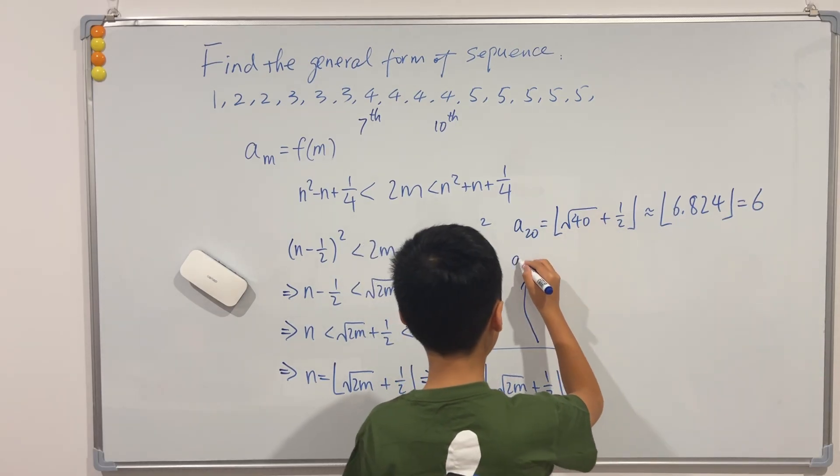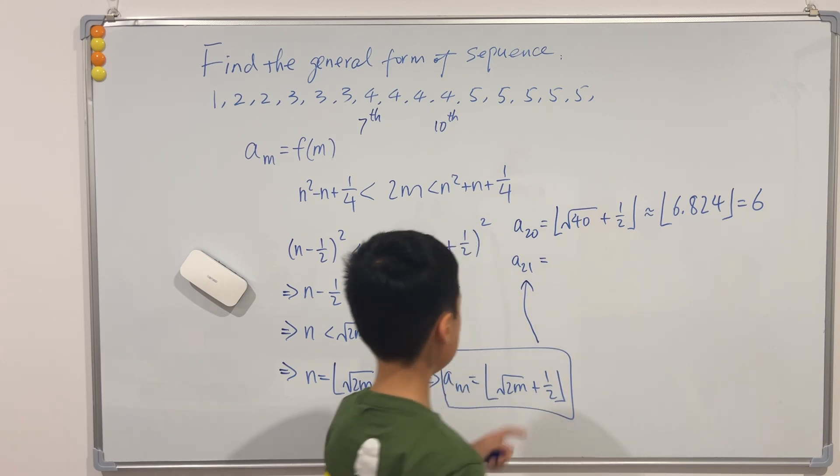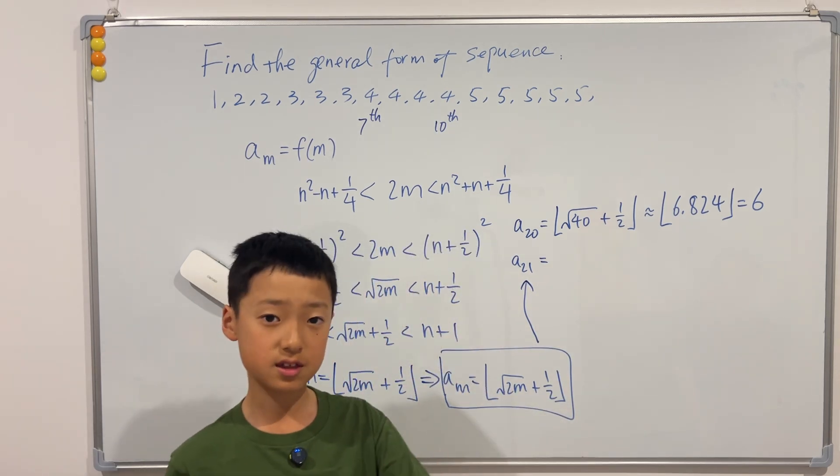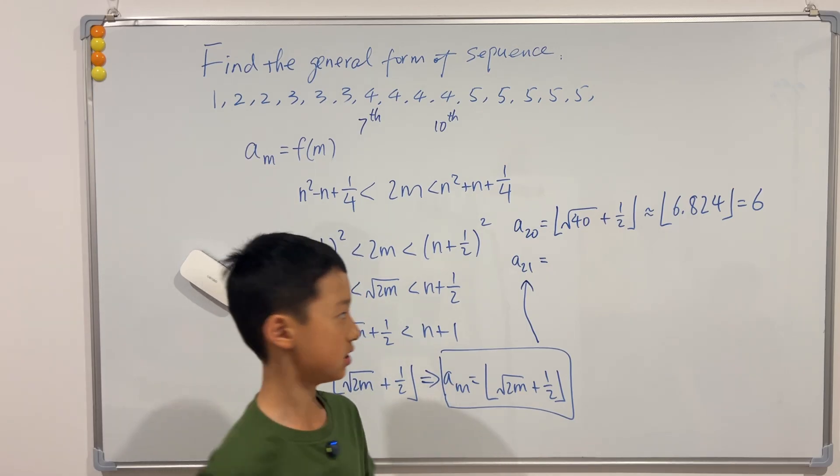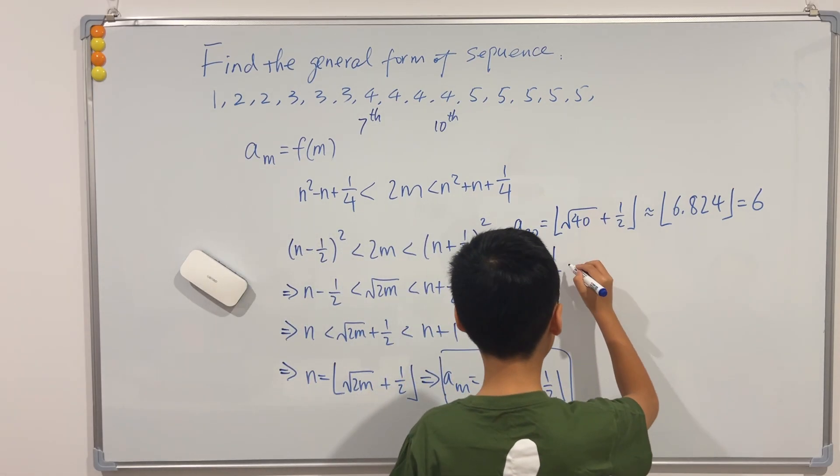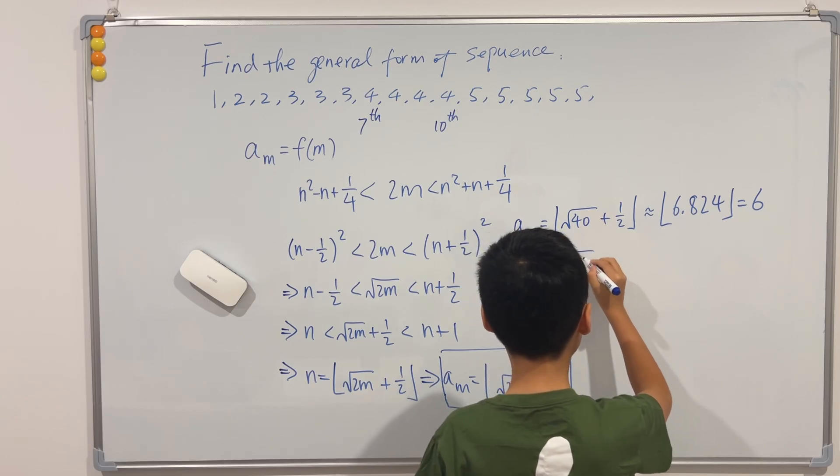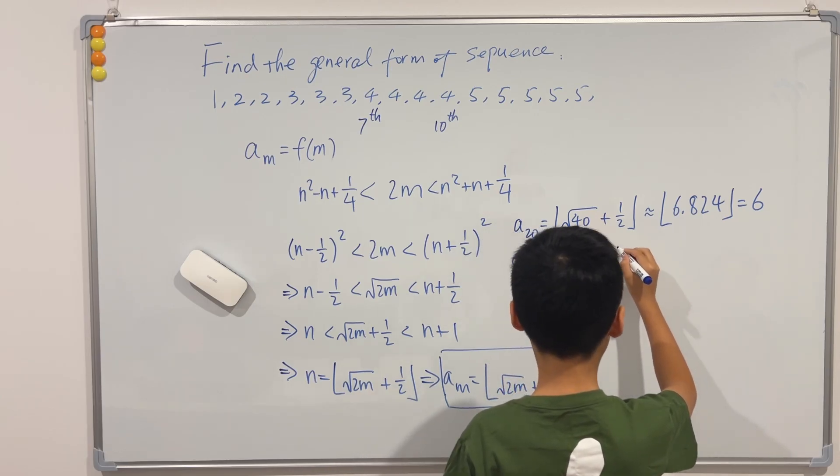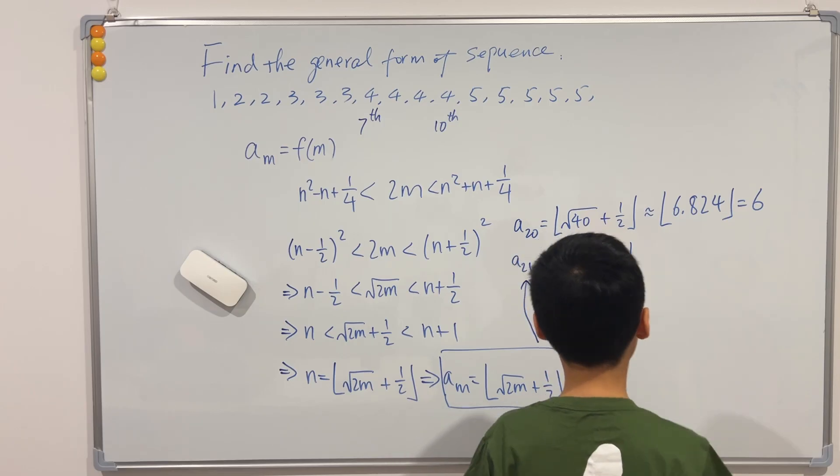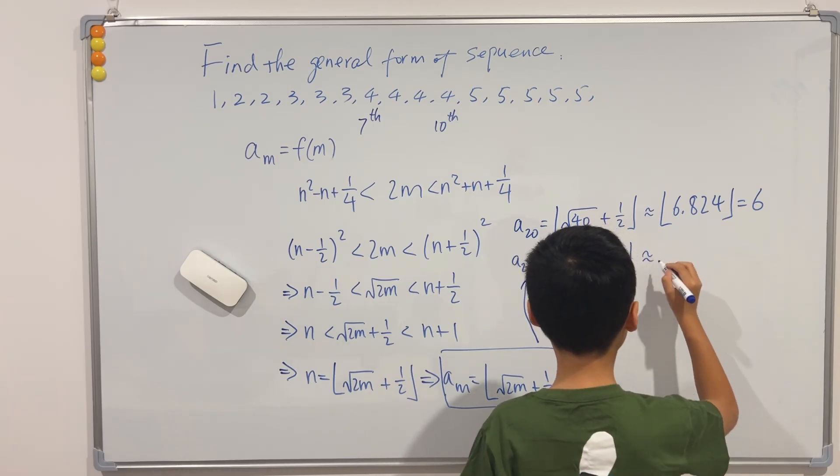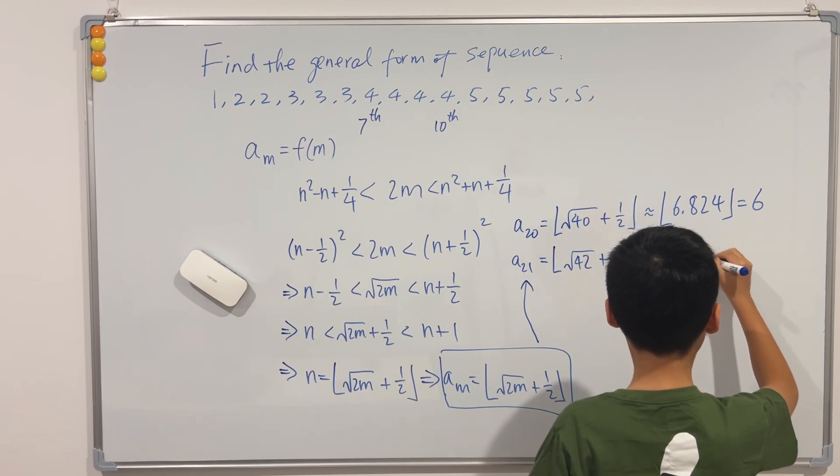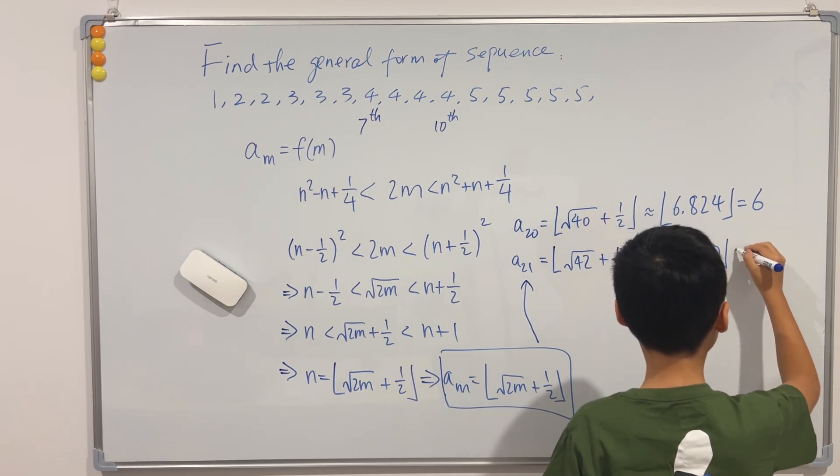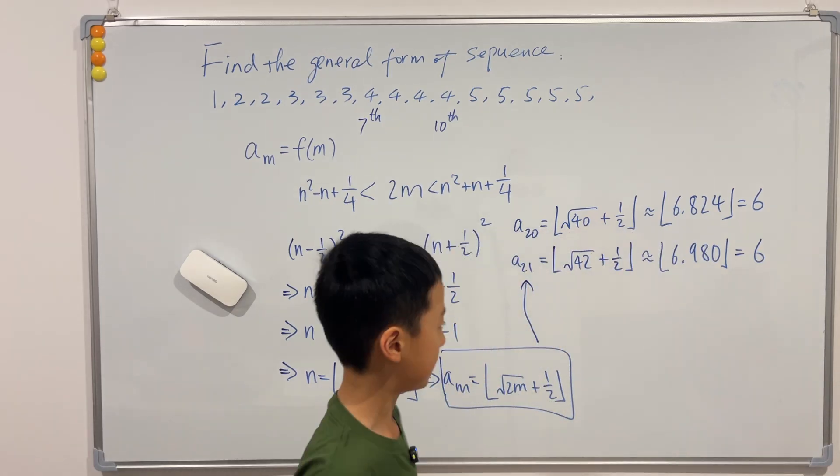And now for 21. If you didn't notice, 21 is actually the sixth triangular number, so if our formula was correct this should output 6. If we put this in the formula, floor function square root of 42 plus one half is approximately equal to the floor function of 6.980, and this is of course also equal to 6.